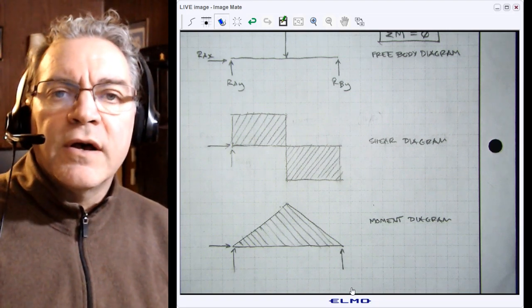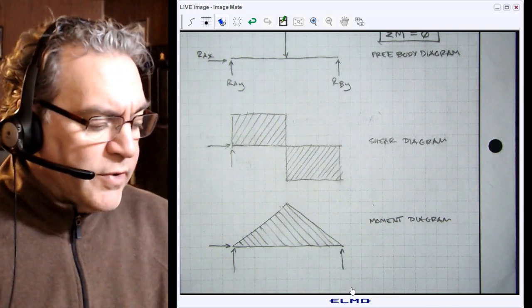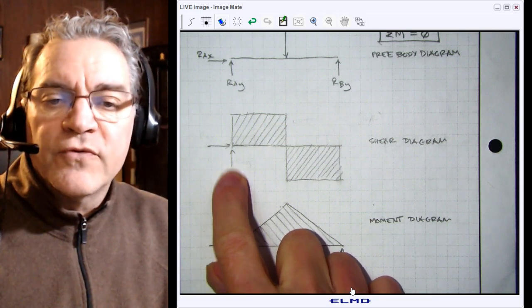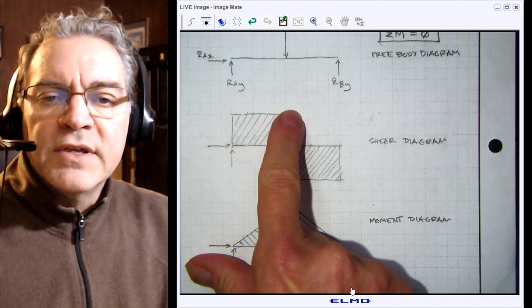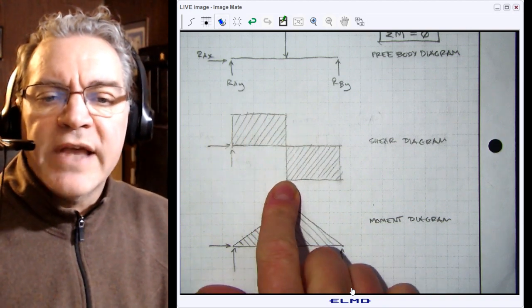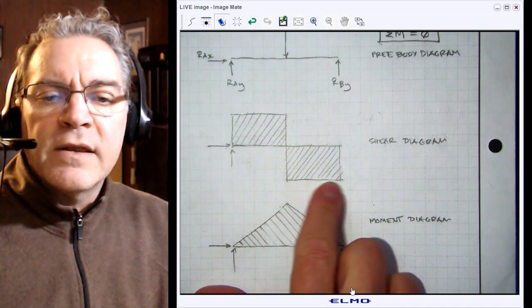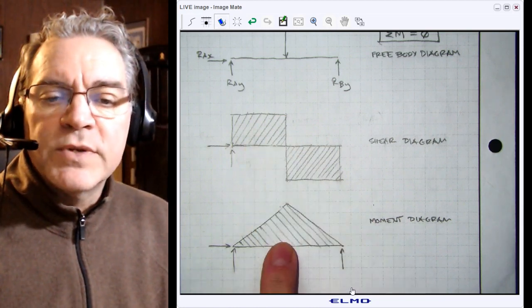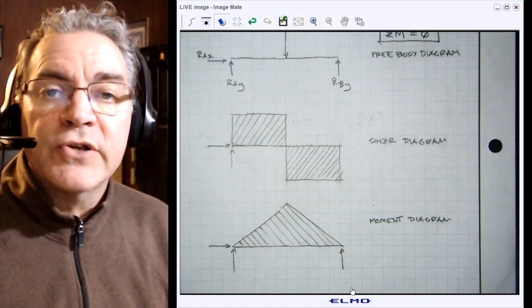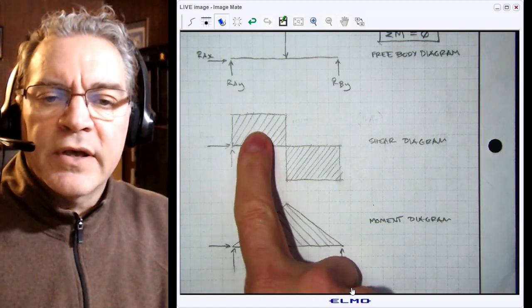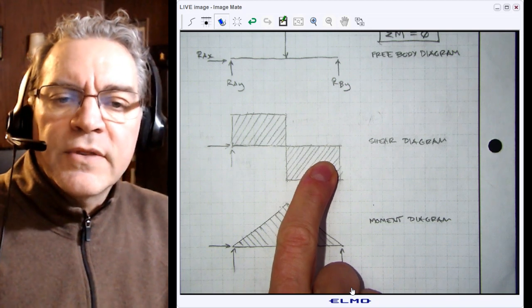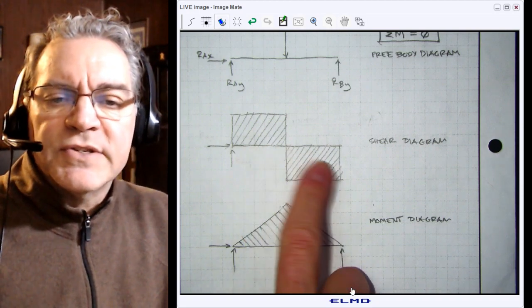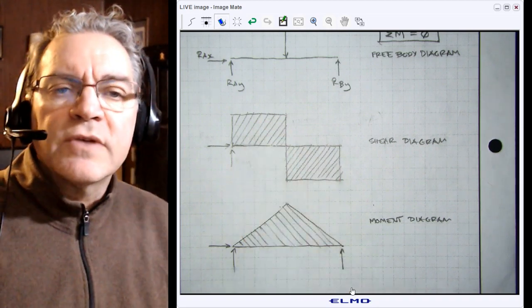Remember this is positive here because RAy is an upward force, so our shear goes positive. When we hit the applied load P, which is a downward force, it goes back negative and then back to zero at the far right. This is a positive shear force, this is a negative shear force, and the moment diagram represents the total area under the curve. Since this area and this area are equal, we go back down to zero at the far right because they're equal and opposite.